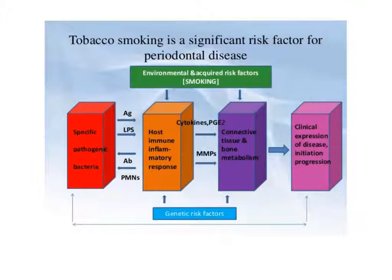In this pathway, genetic factors and other environmental factors such as smoking are tightly associated with the immune response and the effects of cytokines, prostaglandin, and matrix metalloproteinase on the body. Smoking acts as a main environmental or acquired factor, and is one of the main risk factors associated with periodontitis and periodontal disease as a whole.